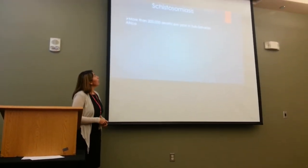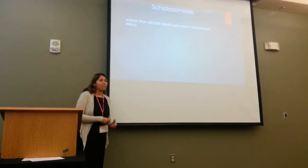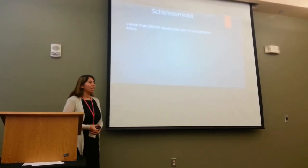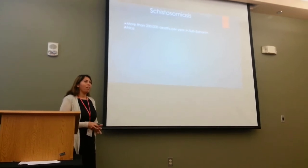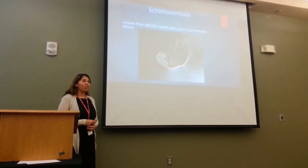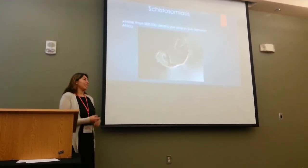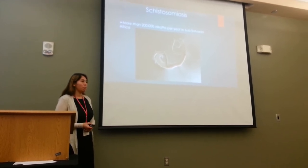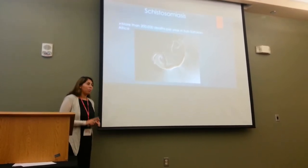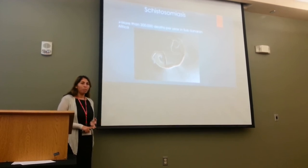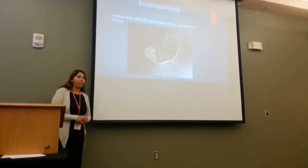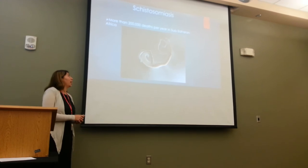Schistosomes are the causative agent of schistosomiasis. Schistosomiasis is a parasitic disease caused by a blood-dwelling flukeworm of the genus Schistosoma. There are three species of schistosomes that cause schistosomiasis in humans: Schistosoma haematobium, Schistosoma japonicum, and Schistosoma mansoni, which we study here on the UNM campus in the Cunningham lab.